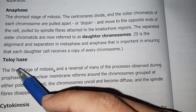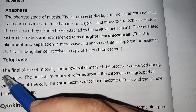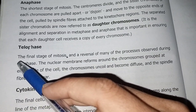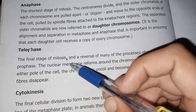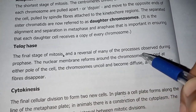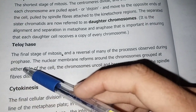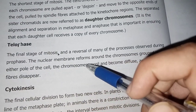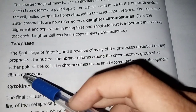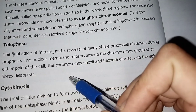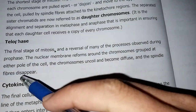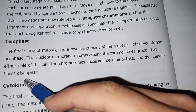The last stage of mitosis is telophase. Telophase is the final stage of mitosis. In a reversal of many of the processes observed during prophase, the nuclear membrane reforms around the chromosomes grouped at either end of the cell. The chromosomes uncoil and become diffuse, and the spindle fibers disassemble.